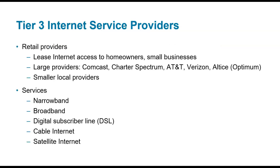Retail providers like Comcast and AT&T are essentially reselling internet they're getting from Tier 2 and Tier 1 providers. Areas not covered well by major providers might have a local independent company with slower service. For home connectivity: narrowband refers to dial-up internet; broadband is anything reaching multiple megabits per second. Broadband can take multiple forms — Digital Subscriber Line (DSL) uses old analog telephone lines and isn't as fast as cable. Cable uses coaxial cable, the same cable carrying TV signals, and can carry faster speeds. Satellite internet works well for downloads but not for uploads. Where you live largely determines your connectivity.